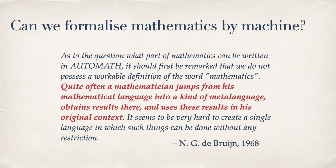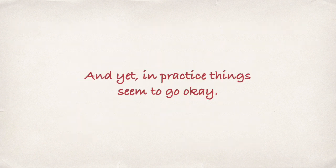De Bruyne wrote in 1968: 'We do not possess a definition of the word mathematics.' He points out that mathematical reasoning goes from calculations into intuitions which are very clear to them — intuitions perhaps justified by rigorous thinking but completely outside their formalism — then back into the formalism. It was very prescient of De Bruyne to see at the very outset that this might be automated.